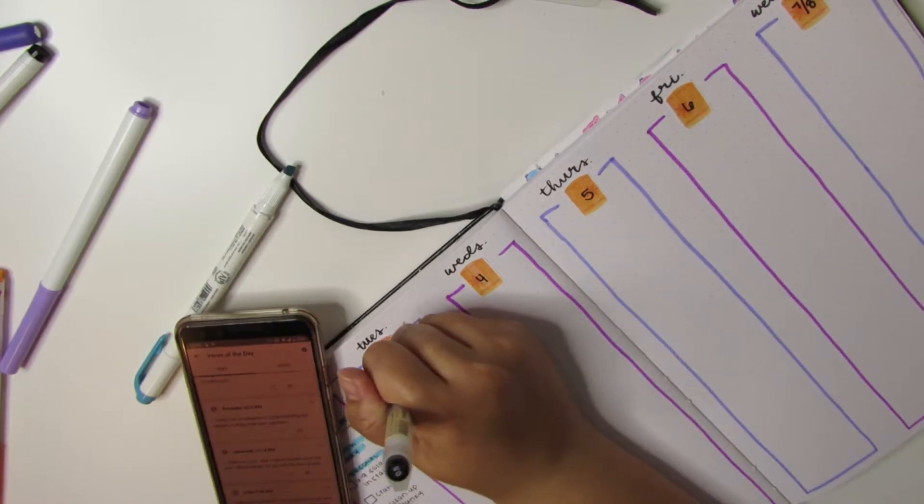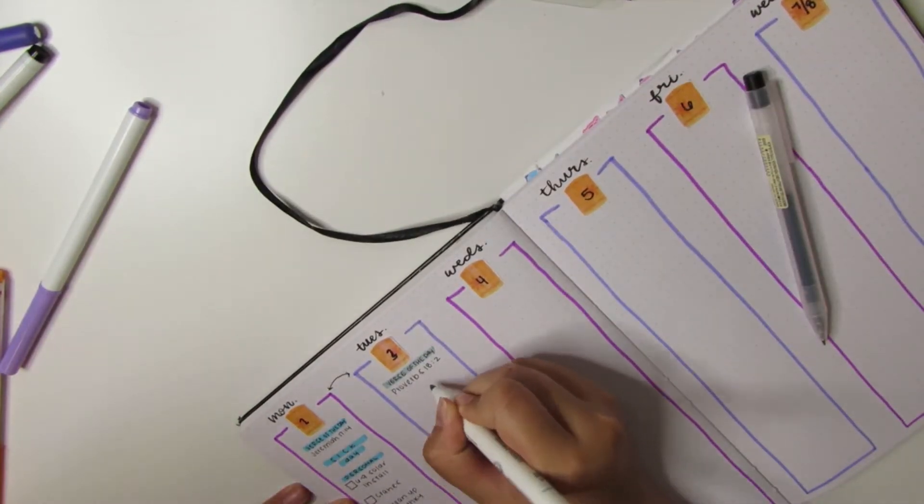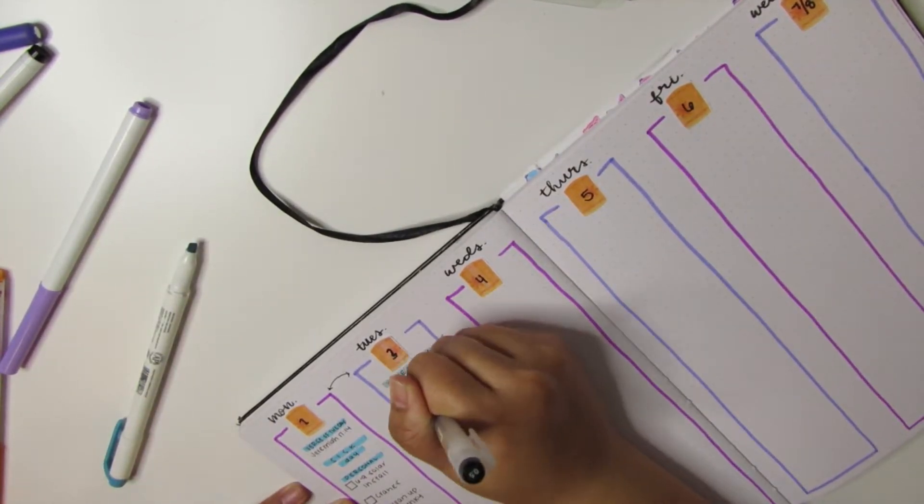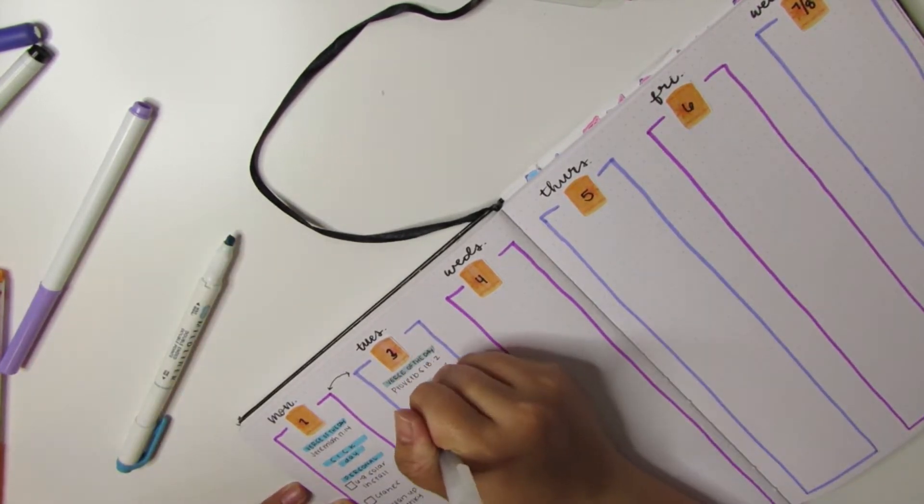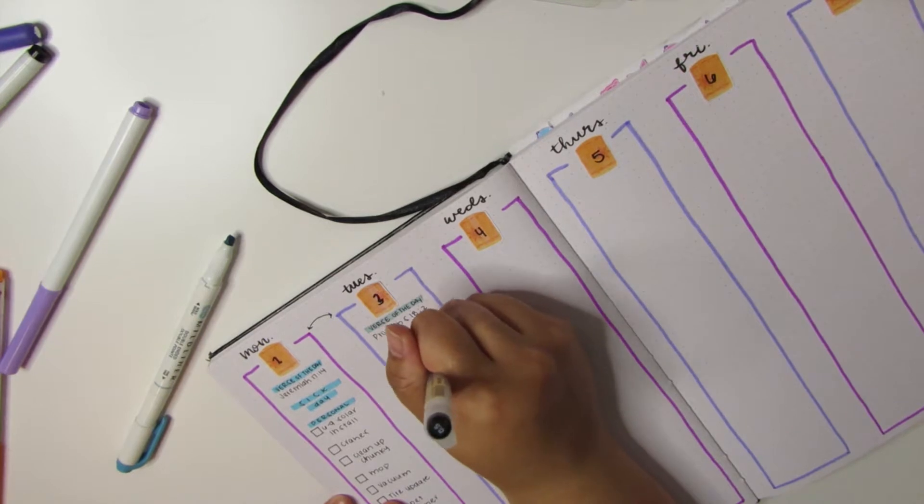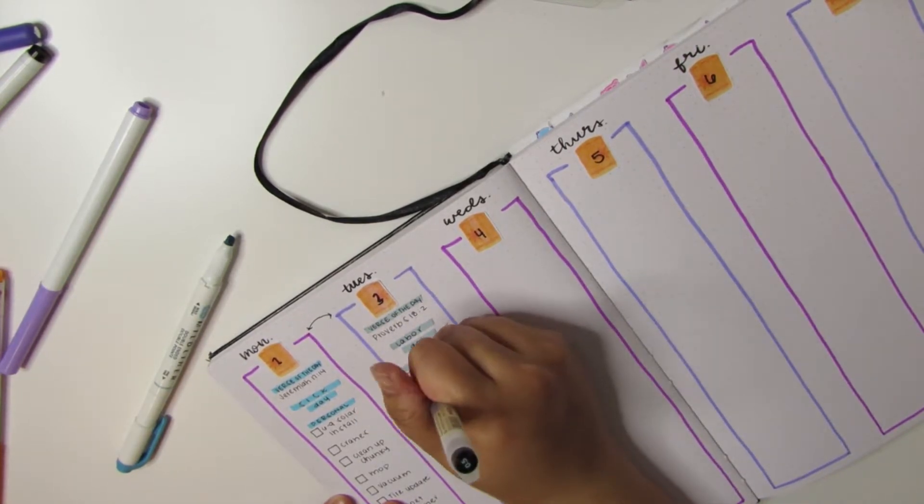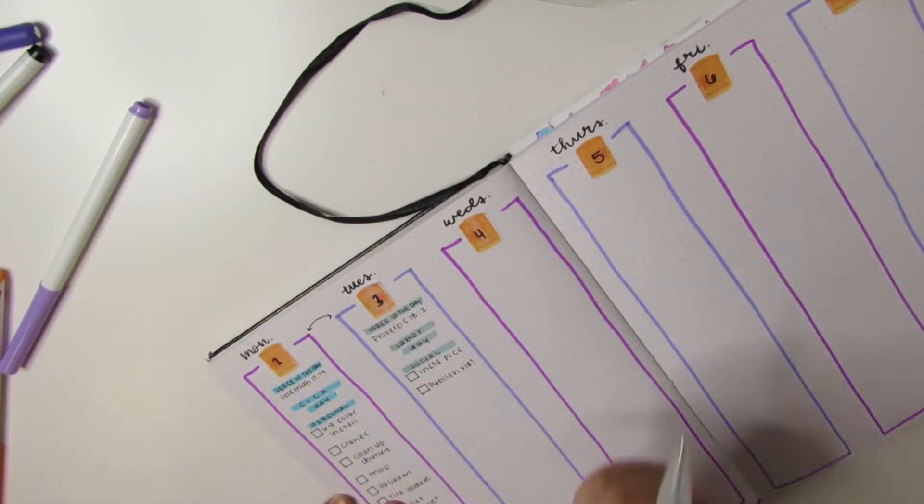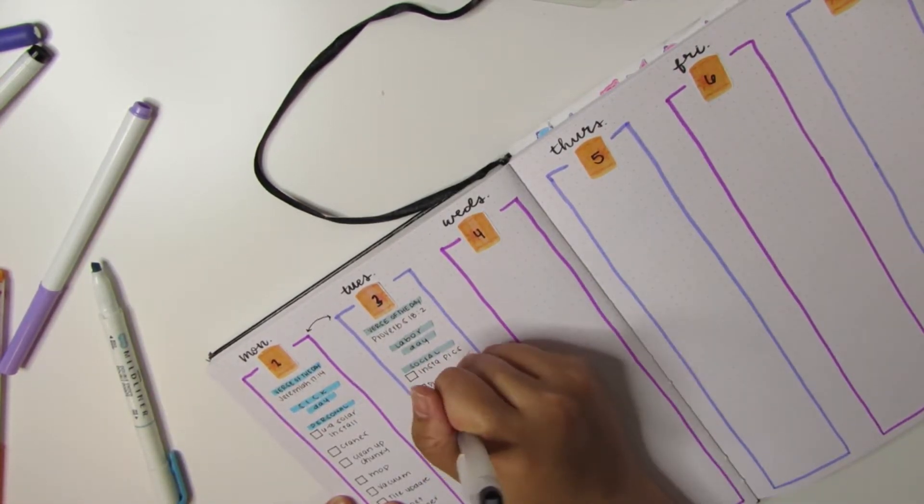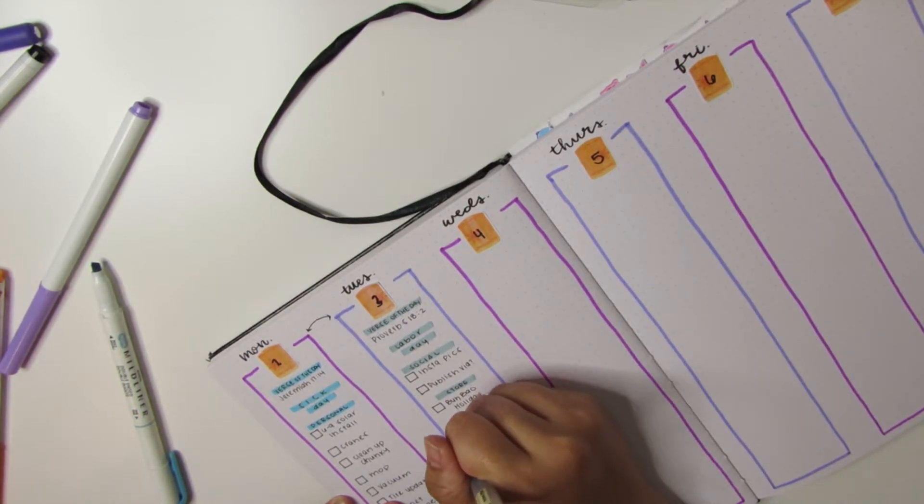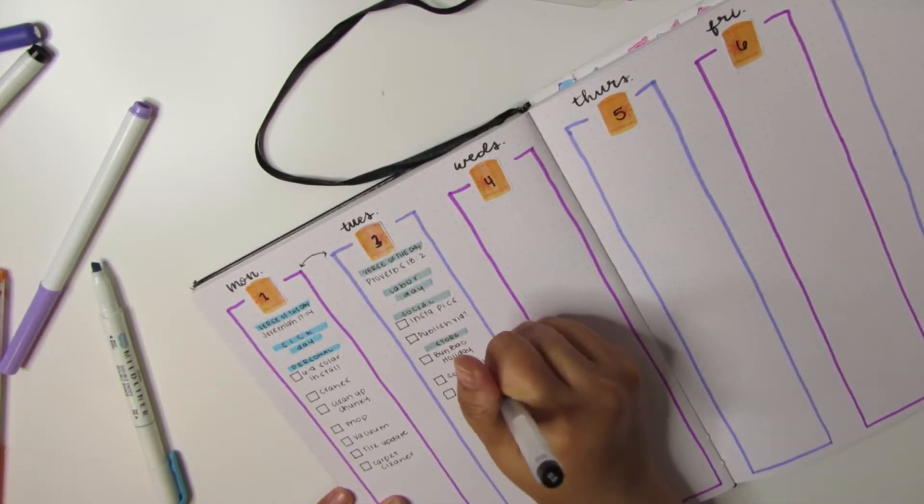I went through the verse of the day and I used my Mildliners from Zebra to create little headers within the spread. It's such a small area, I didn't want to create actual stickers for it when I can just take my Mildliners and create my headers.